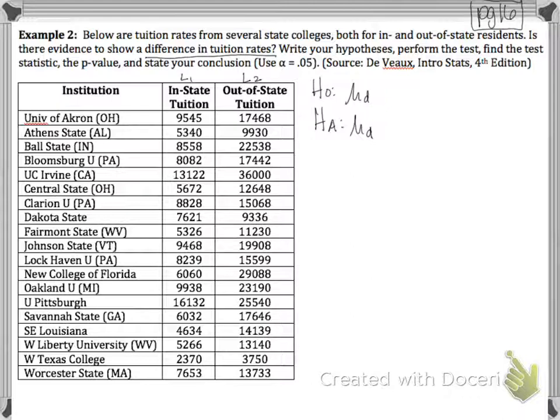And in our previous example, we were told a direction. We wanted to make sure that students scored better. But in this example, we're just asked, is there a difference in tuition rates? So if there's no difference, then the two lists would be the same, and therefore, when we subtract, their mean would be zero.